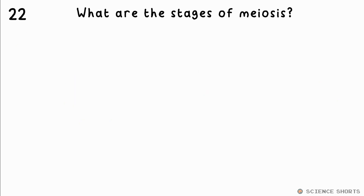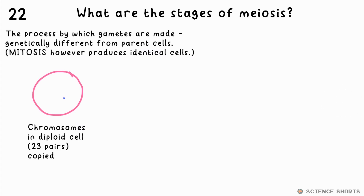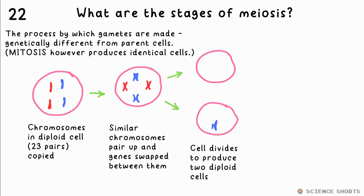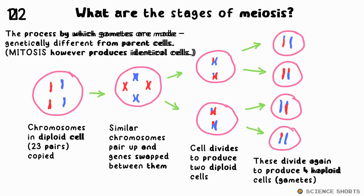What are the stages of meiosis? Meiosis is how gametes are made. The chromosomes in a diploid cell are copied. Similar chromosomes pair up and genes are swapped between them. The cell then divides to produce two diploid cells, which then divide again to produce four genetically different haploid cells — your gametes.